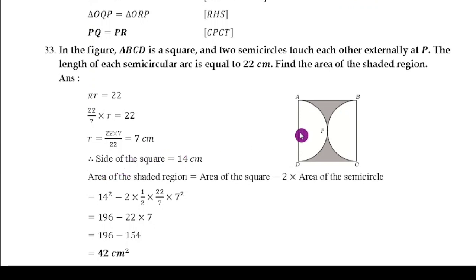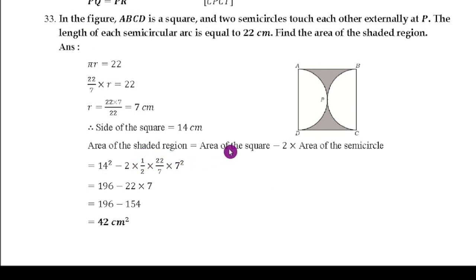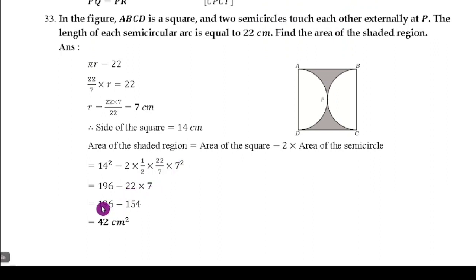Since both radii are 7 cm, the side of the square = 7 + 7 = 14 cm. Area of shaded region = area of square − 2 × area of semicircle. Area of square = 14² = 196. Minus 2 × (½ × 22/7 × 7²): the 2 and ½ cancel, and one 7 cancels, leaving 22 × 7 = 154. Therefore 196 − 154 = 42 cm².